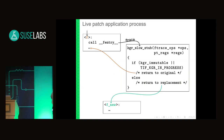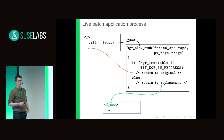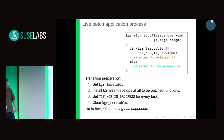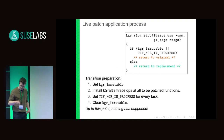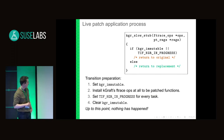This decision whether or not to return to the original or to the new one is based on some global state. For setting up the KGRAFT transition, first some global immutable flag is set, then KGRAFT would install these F-trace operations at each of the to-be-patched functions.